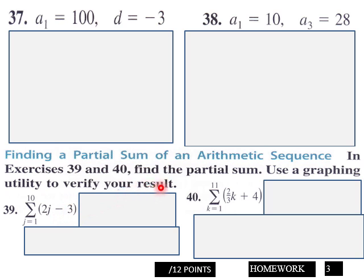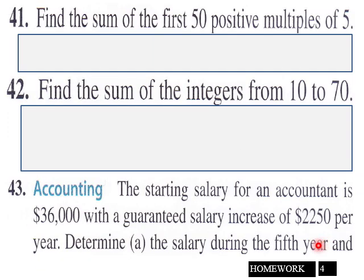Find a partial sum and then use a graphing calculator to verify your result. So you got 12 points here on page 3. Page 4: Find the sum of the first 50 positive multiples of 5. Number 42: Find the sum of the integers from 10 to 70, and then we got a word problem down here, number 43.